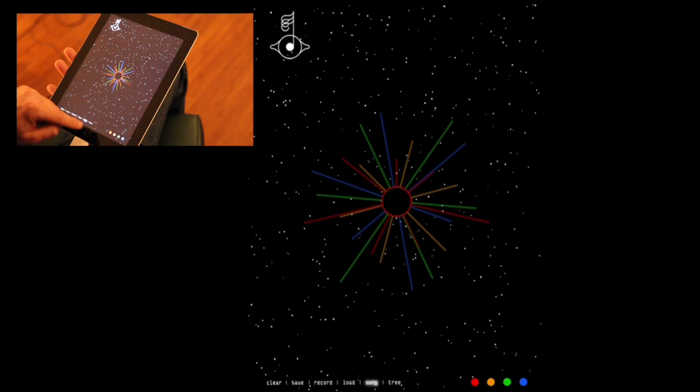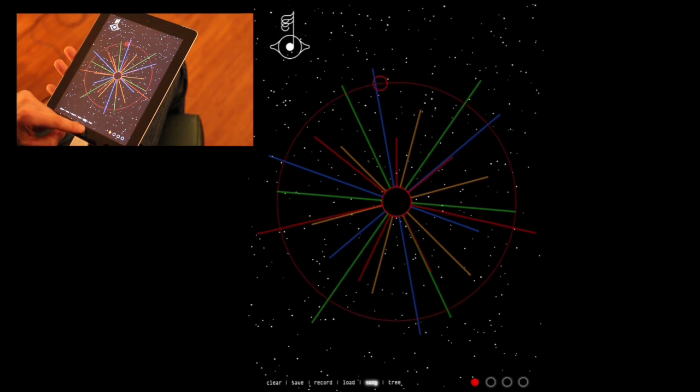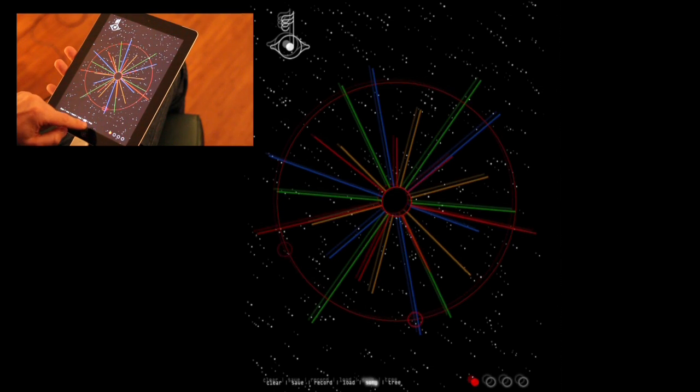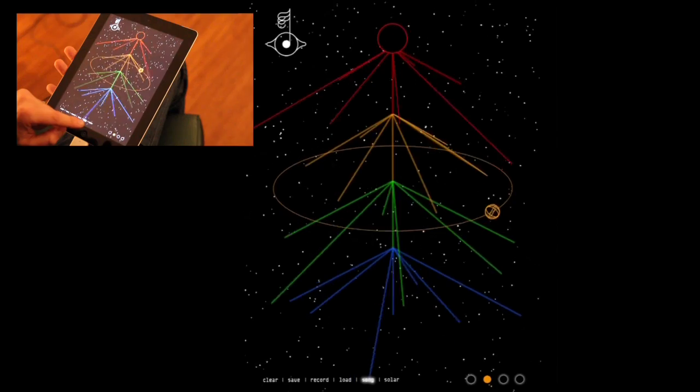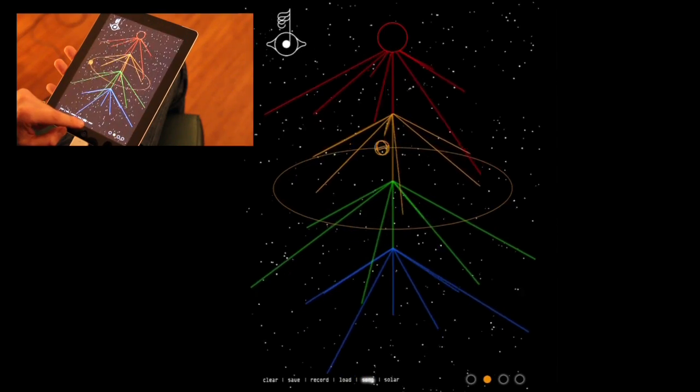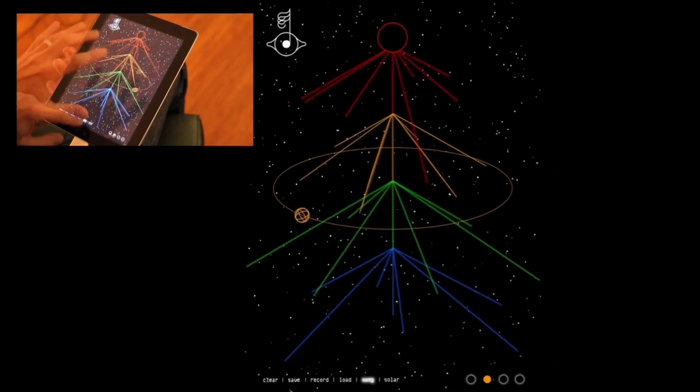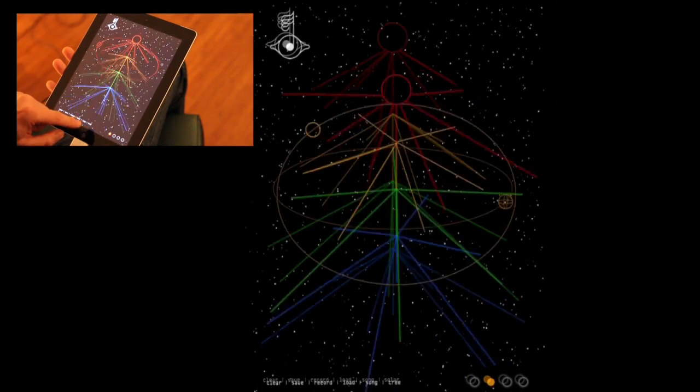Let's go into song mode and create the song that Bjork wrote with this app. But let's go into the Christmas tree mode so we can see how this plays in three dimensions. Let's turn the song off and go back to the solar mode.